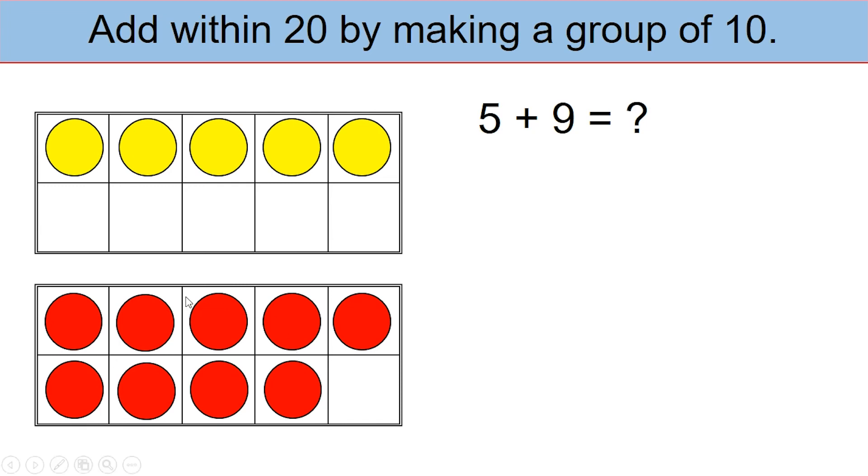As usual, you can see, for the second tens frame to make a 10, we are missing 1 counter over here. So let's go back and revisit this frame and look at it differently. 5 is nothing but 4 plus 1. If I move this one yellow counter to this space, this now becomes a 10. Let's do it.